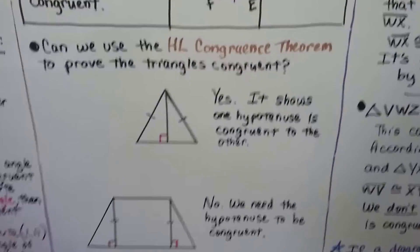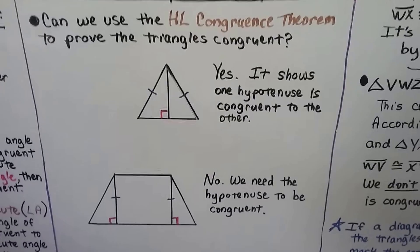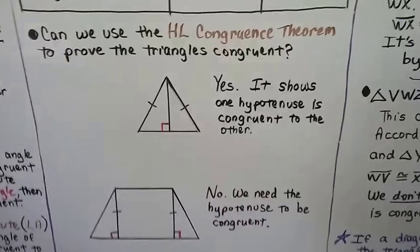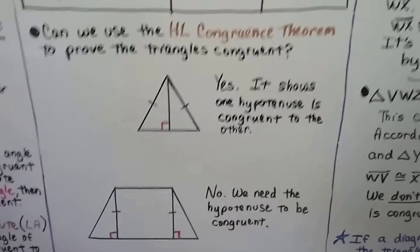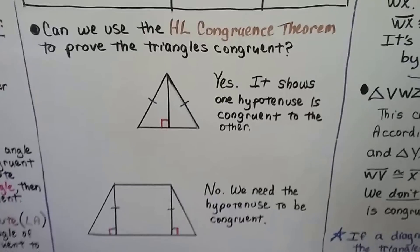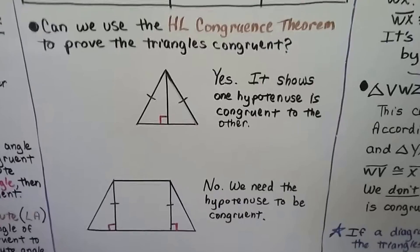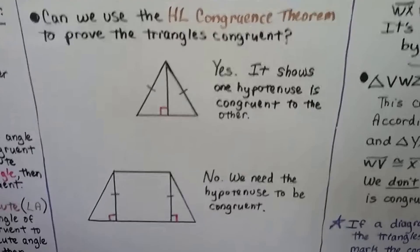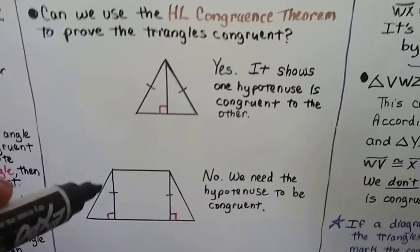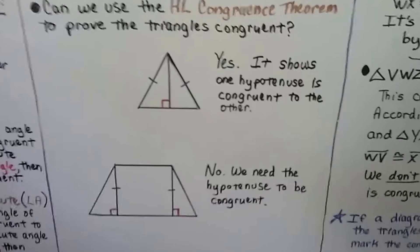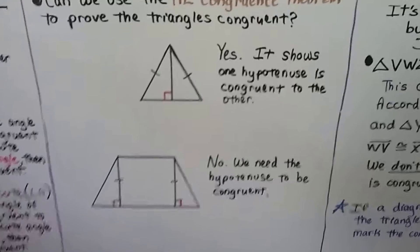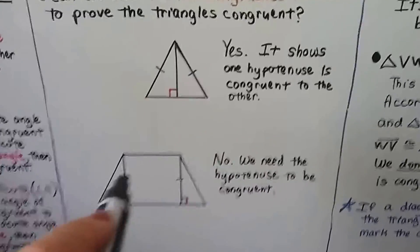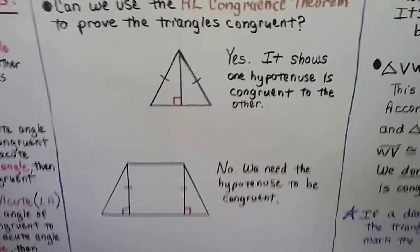Can we use the HL congruence theorem to prove the triangles are congruent? We have two diagrams. For the first one, it would be yes — it shows one hypotenuse is congruent to the other. We have two right triangles and we can see the congruence marks on the hypotenuse. For the second one, it would be no, because we need the hypotenuse to be congruent. It shows two right triangles, but the legs are congruent, not the hypotenuse.